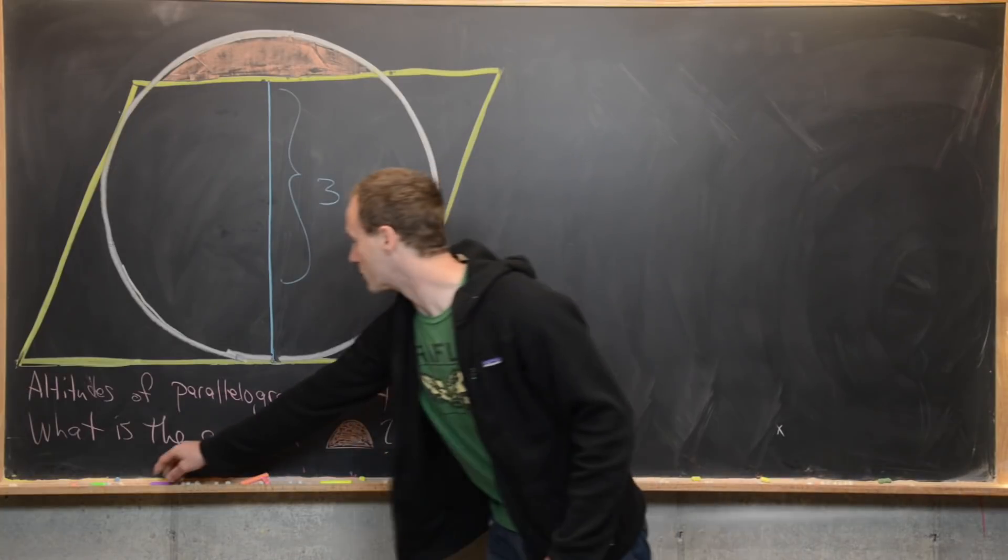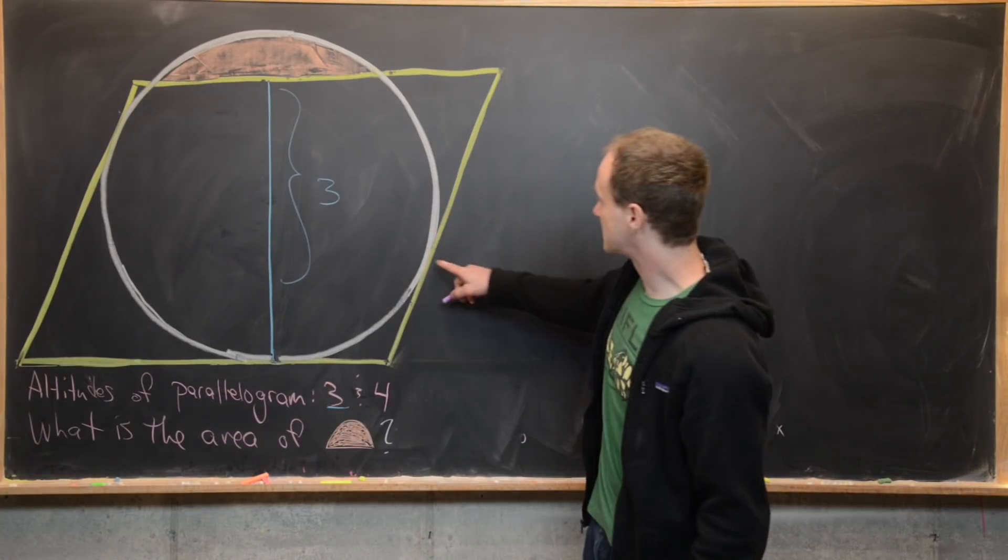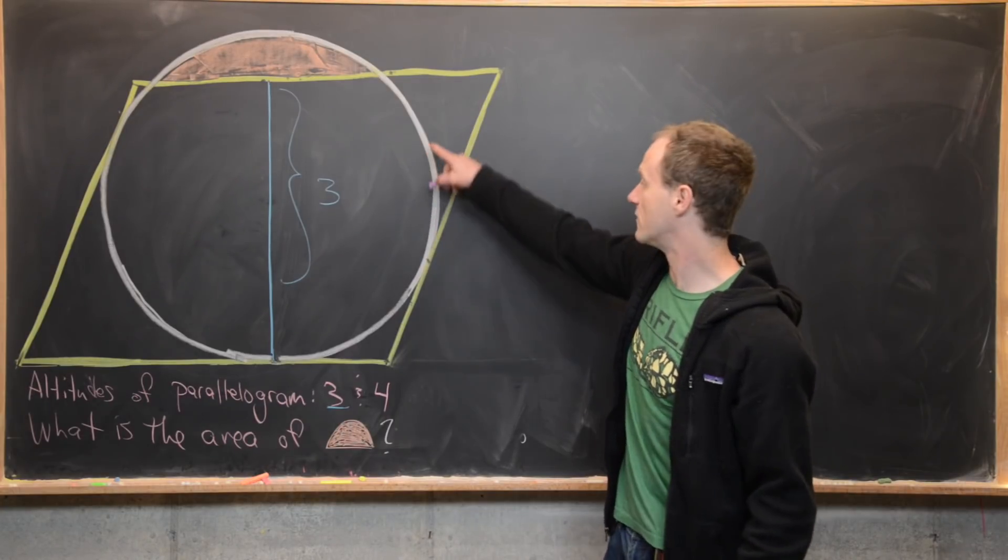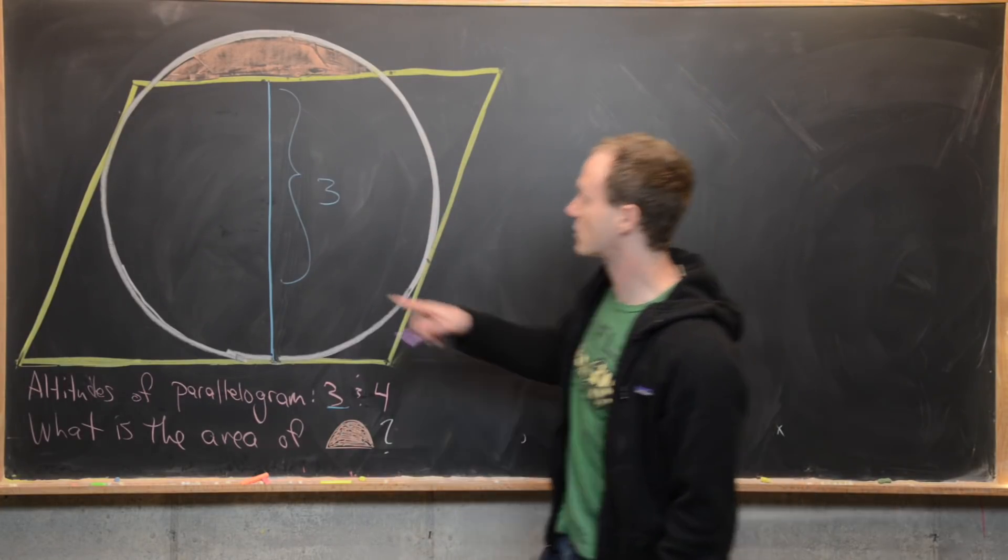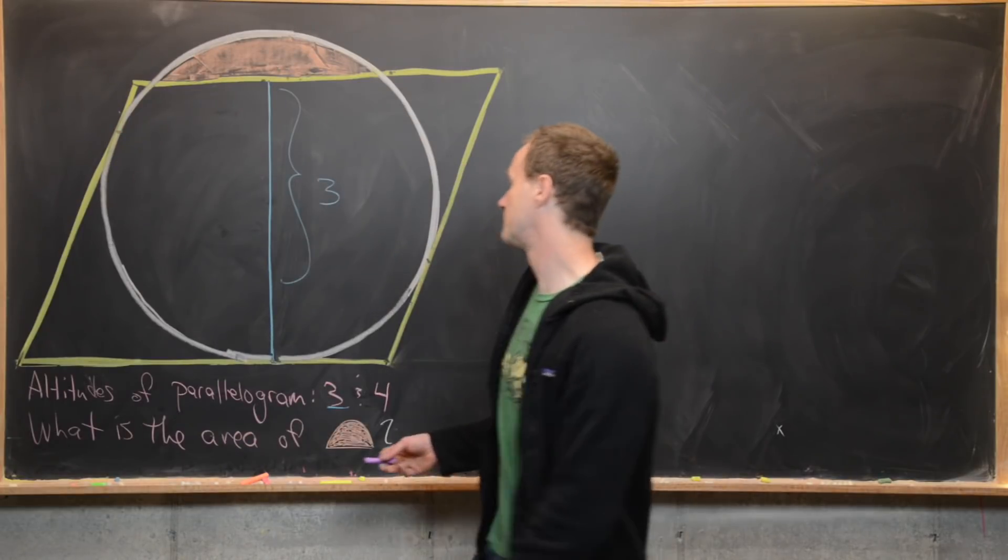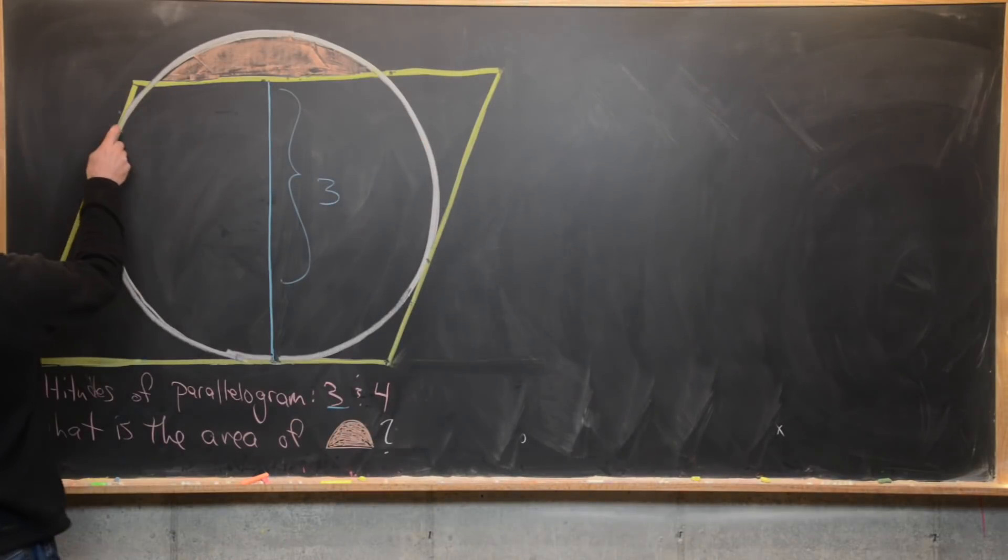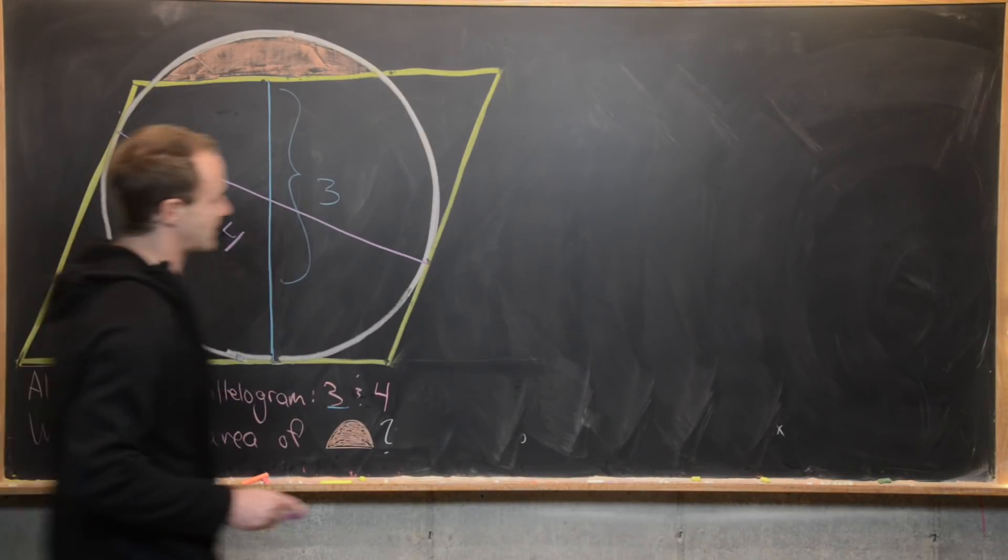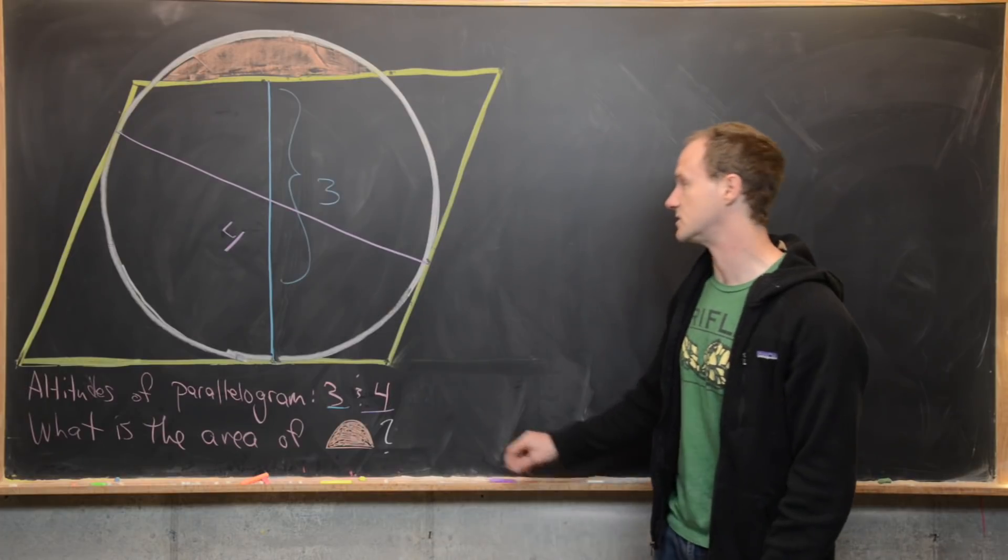And then next what we can do is calculate the other altitude by going from this intersection point of the circle with the parallelogram over to this one. So let's maybe draw that in. Good. And we know that that entire length is four again because it's the other altitude.